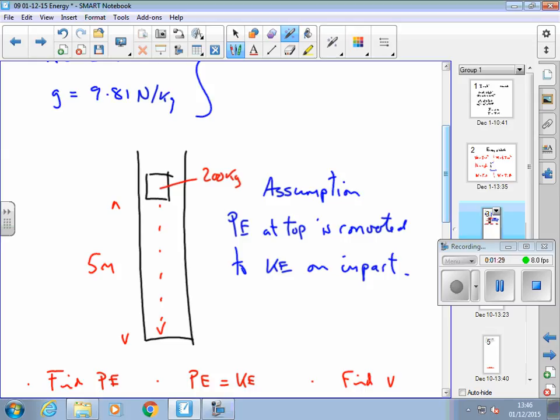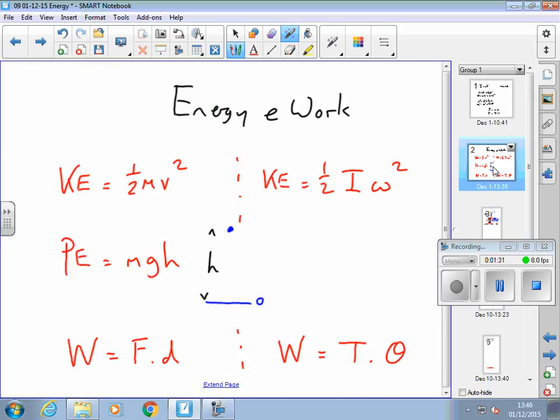Then I use the formula for kinetic energy that we've written down, this one here, and rearrange it to find the velocity. So that's the way we go about these problems. It's very common to have to rearrange this formula for velocity.